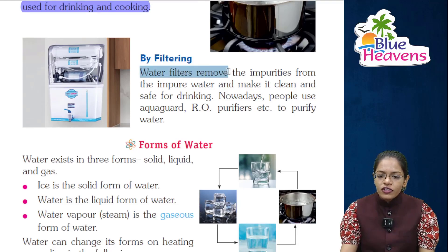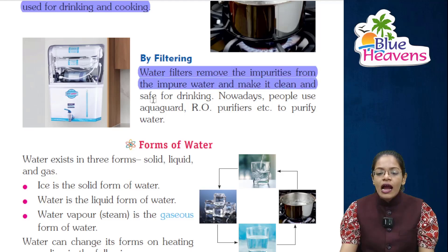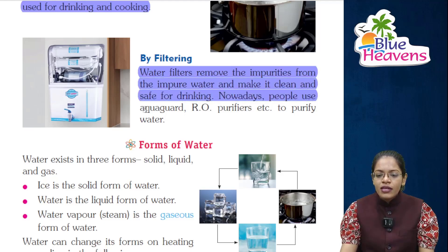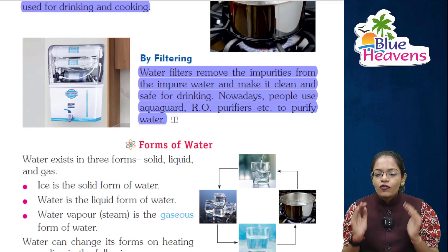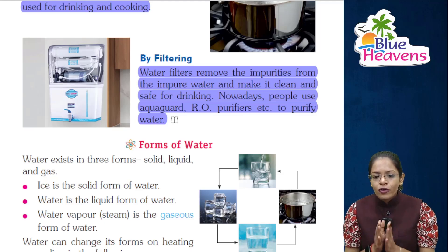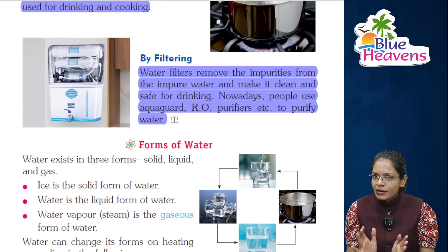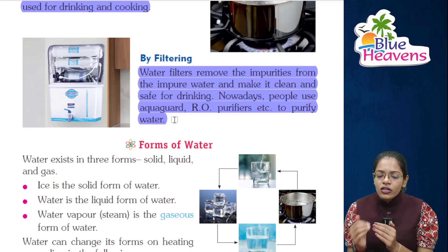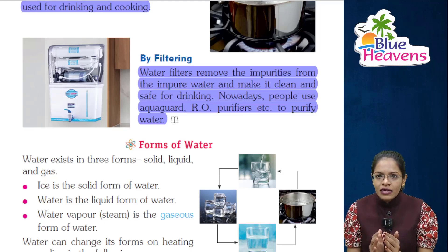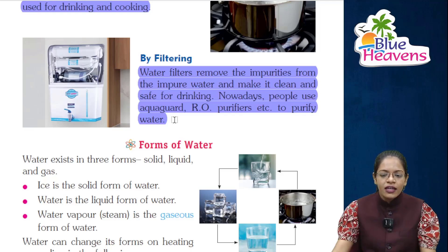The second way is by filtering. Water filters remove impurities from impure water and make it clean and safe for drinking. Nowadays, people use aqua guard and RO purifiers to purify water. Water filters remove impurities and make water completely pure and clean so you can drink it. Today people use aqua guard and RO purifiers at home to clean their water.